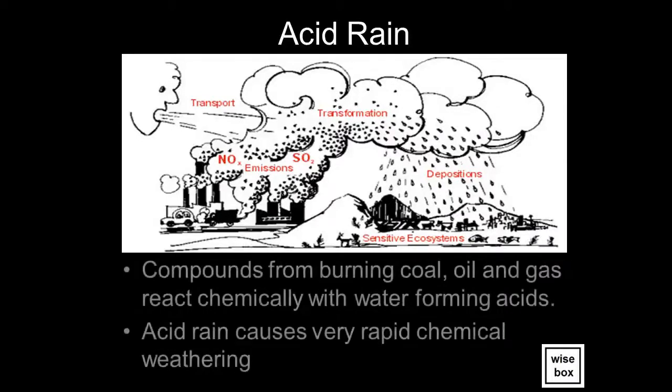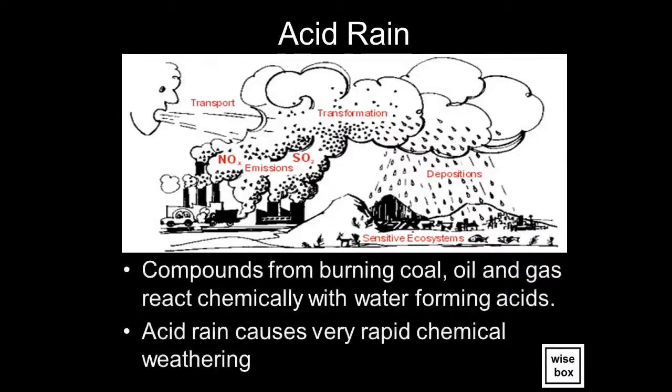Compounds from burning coal, oil, and gas react chemically with water, forming acids. Acid rain causes very rapid chemical weathering.